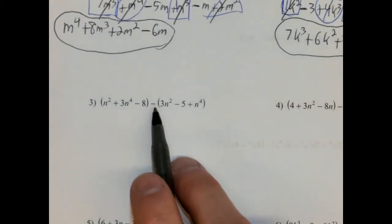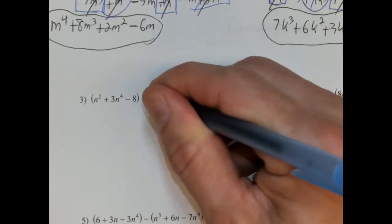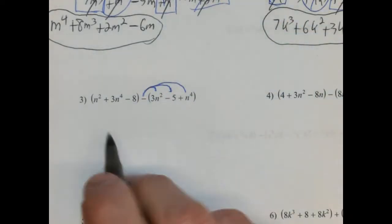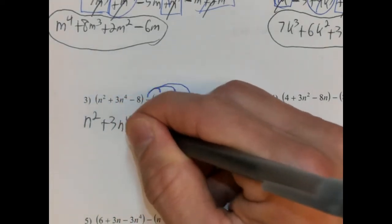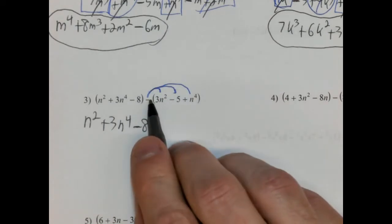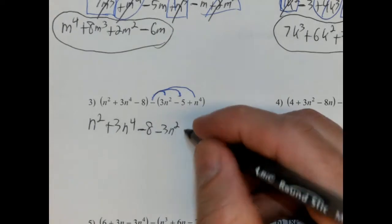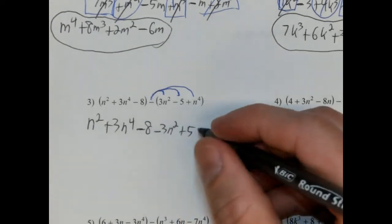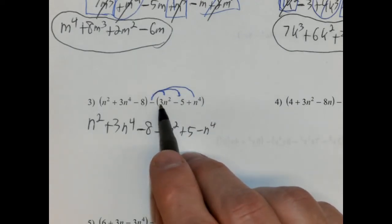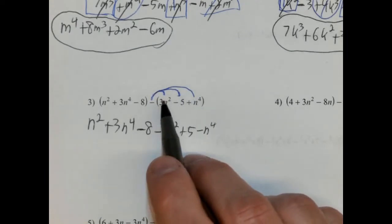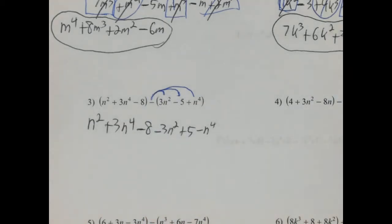Now we have a minus sign, so this is going to be a little different. We don't just rewrite it — we have to distribute this negative sign, because that's going to change all these signs. So this doesn't change; this all comes down. Oftentimes what I see students do is they rewrite this but just leave the negative sign in front of the 3n squared and let the rest stay the same. So don't fall into that trap — which is one of the reasons why we draw the distribution arrows to serve as a reminder.